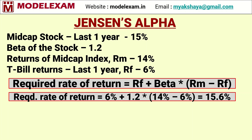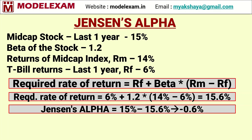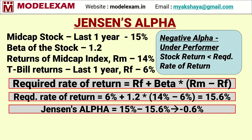Here everything remains the same — I have changed only one value, that is the market return, which is changed to 14%. Now the required rate of return becomes 15.6%. However, our stock has given only 15%. So the alpha value is minus 0.6%, denoting negative alpha. It is an underperformer — stock return is less than required rate of return, so this stock should not be considered for investment.